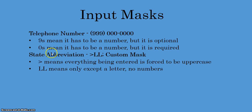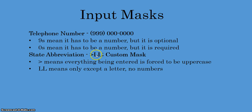Our next example is the state abbreviation. When you're entering customer records you want the state abbreviation to be in a certain format. In Access the predefined input masks don't include one for state abbreviation, so you're going to learn how to create a custom mask. The greater-than symbol means that everything the user enters is forced into uppercase, and the two capital L's mean that it will only accept a letter — no numbers are allowed.